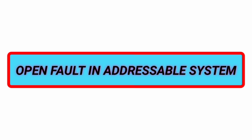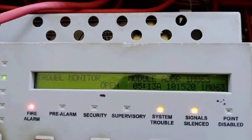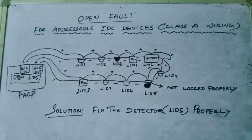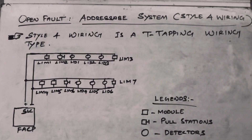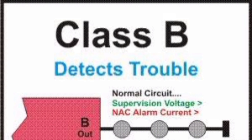Now, for finding the open trouble in an addressable system, it is much easier to find. It will show the address and location as per your program. You can go to that place and fix the detector, pull station, or module properly — it's a piece of cake. As I explained in class wiring, here you have a T-tap wiring design, and here we have NAC devices with open fault in Class B wiring.